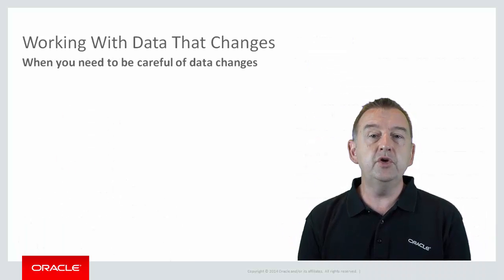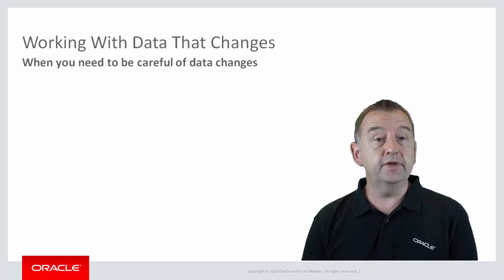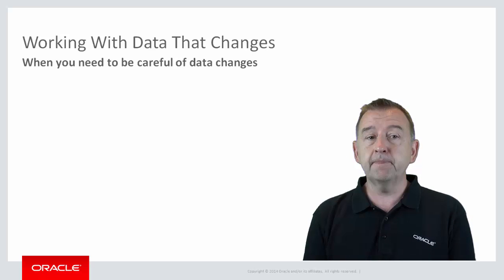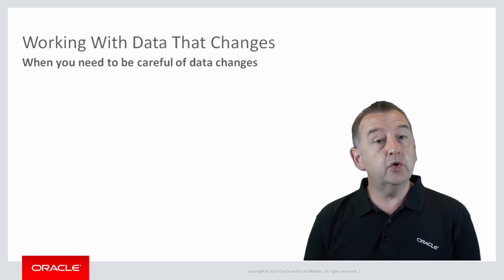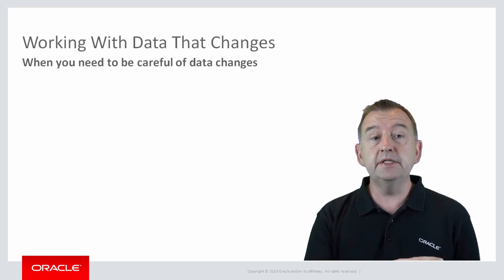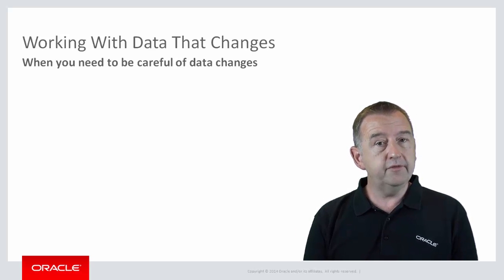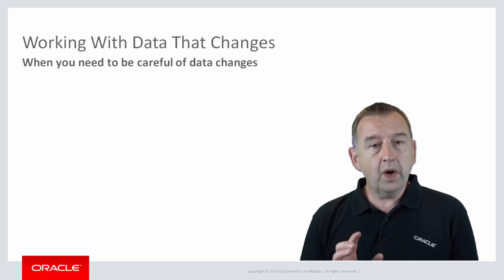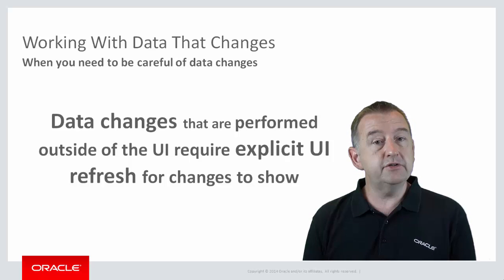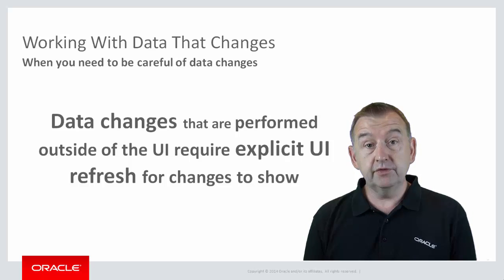The problem is that the UI doesn't know it's been changed. Usually data is changed by the user at the user interface, and that change is automatically pushed into the data layer by the framework, so UI and data are always in sync. But in this case we're going in the other direction - the data is being changed behind the scenes by the managed bean, and that UI field isn't aware that the change has happened. There's one basic rule to remember here: data changes that are performed outside of the UI require an explicit UI refresh for changes to show.